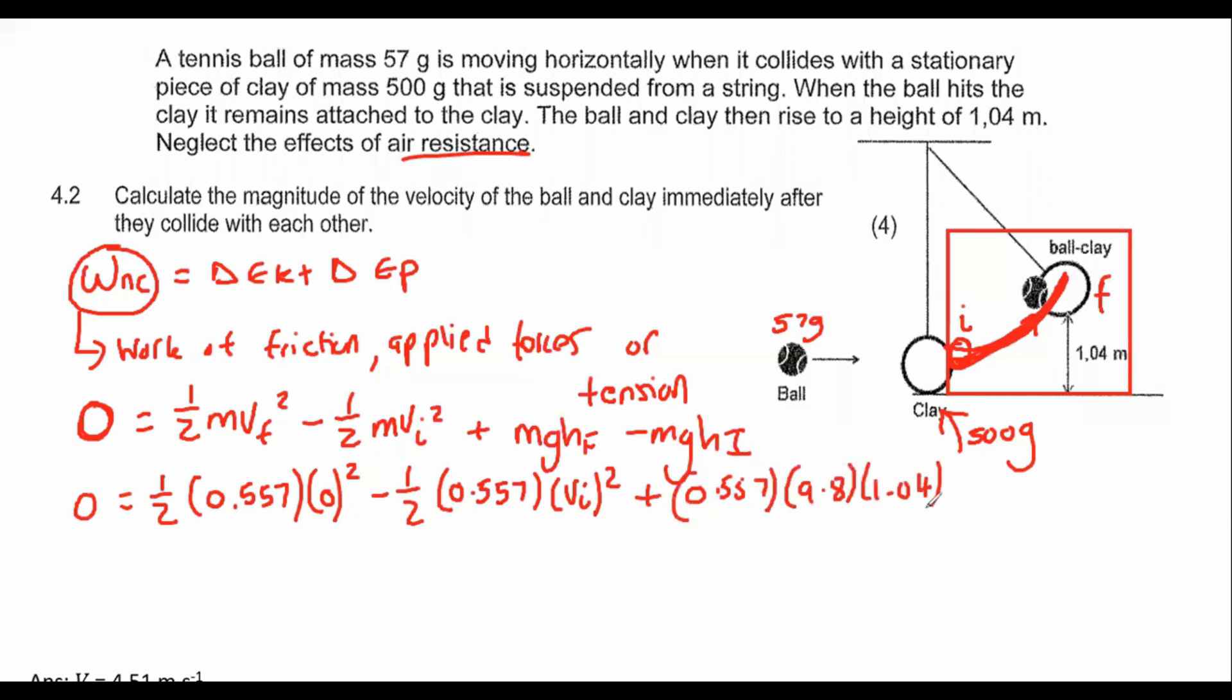Then we've got a final height of 1.04, and the initial height will be zero, because that's when the clay and the ball collided with each other. What's nice is that in this equation, we only have one unknown. So I'm going to take that over to the left hand side of the equation, and then I'm going to type everything else in on the right hand side.